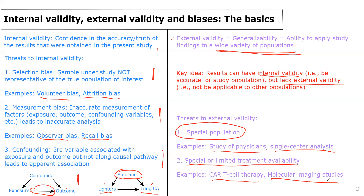So all in all, a quick summary: internal validity is asking what is our confidence in the truth of this study — are our study results actually true? And external validity is asking whether our study results can be applied to other populations beyond the one used in this current study. As usual, I have a few questions after this lecture to help see whether you understood the material and can apply it in a way you'll see on the MDME exam. Please like, comment, subscribe, and good luck.